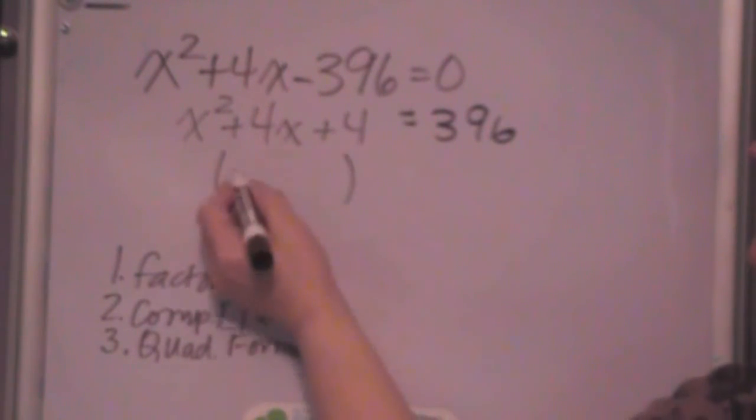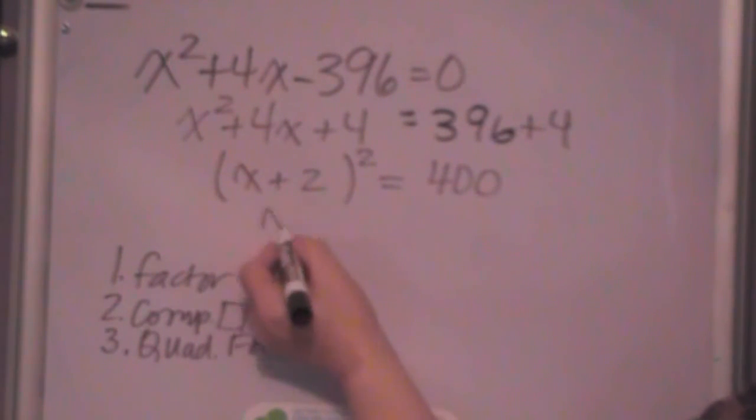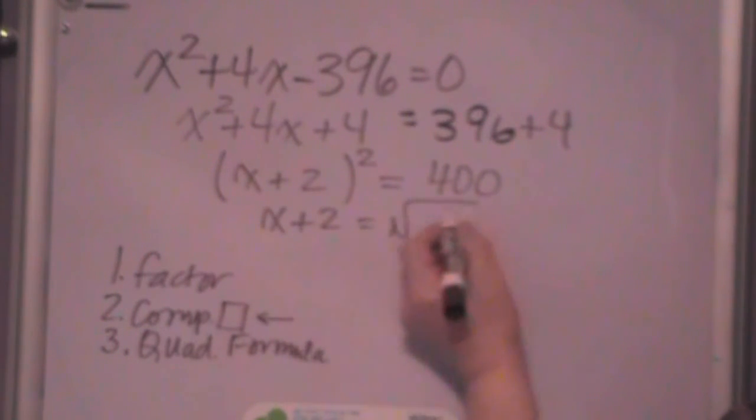Well, now, this is a perfect square. It's x plus 2 quantity squared is equal to, I forgot to add the 4 over here, didn't I? And now I get 400. Well, this is nice, because taking the square root of both sides, x plus 2 is equal to the square root of 400, which I happen to know is 20. So, I have subtract 2 from both sides, so I get plus or minus 20 minus 2. And so, now I have positive 20 minus 2, which gives me 18, and negative 20 minus 2 gives me minus 22.